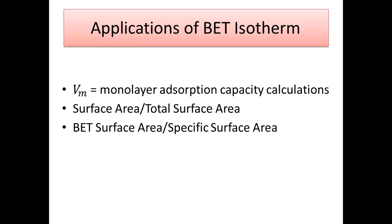Today we will discuss the applications of BET adsorption isotherm. Although the theory is very important, the outcome from the equations is most important. There are three very important calculations here, which you will use to calculate the total surface area or the specific surface area of the adsorbent — the material on which the adsorbate is going to adsorb. These calculations use the monolayer adsorption capacity.